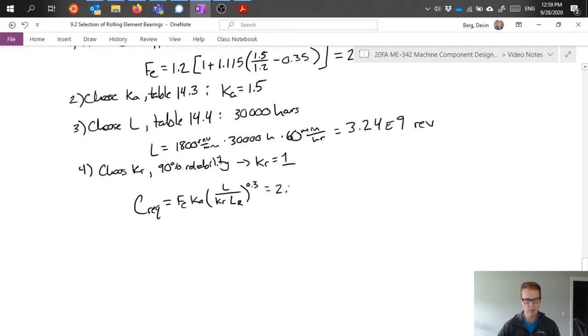So we plug in what we have. Remembering that this 9e to the 7th value is the rated life for the table that we have available from the book. And calculating this all out tells us that we have a rated load capacity requirement of 10 and a half kilonewtons. Great.